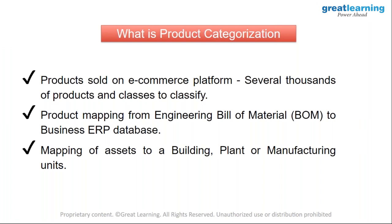A third context is in manufacturing plants, hospitals, or large facilities. If you go to a manufacturing scenario, they have a lot of machines, assembly lines, sensors, and subsystems. All these assets are managed in a particular order and grouped into categories. We want to make sure we can map a sensor to a system — for example, Sensor XYZ mapped to System ABC, or a valve mapped to another system. This is another area where product categorization is hugely important.